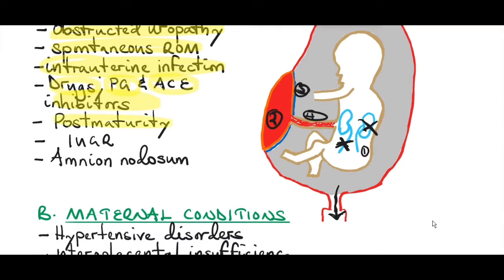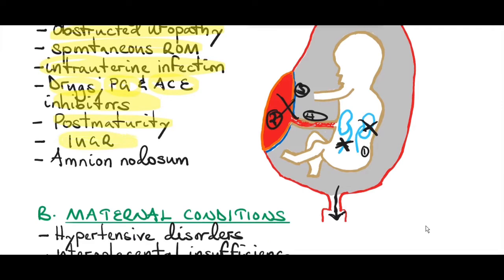Post-maturity, associated with post-term pregnancy beyond 40 weeks, leads to placental degeneration and placental insufficiency, which reduces amniotic fluid production. Intrauterine growth retardation (IUGR) is also associated with oligohydramnios — the growth-restricted fetus has reduced fetal blood volume, leading to reduced renal blood flow, reduced fetal urine output, and therefore reduced amniotic fluid.